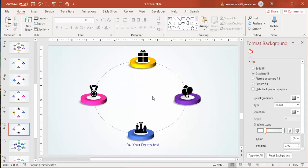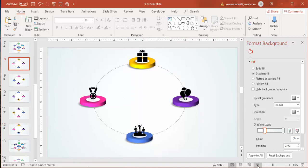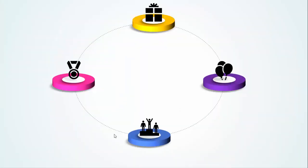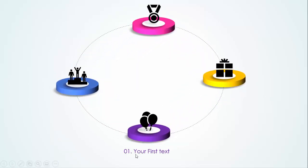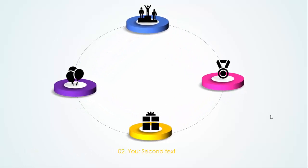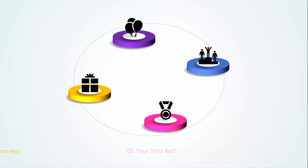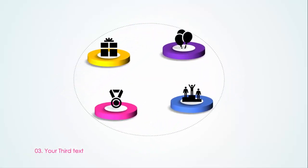You can also add an icon here if you want. Let's see how it looks in slideshow mode. You can see the four options — when I click, the first circle comes down and the first text appears. Click again and the second orange option comes down with the second text, then the third and fourth.